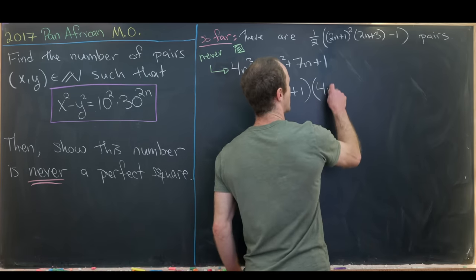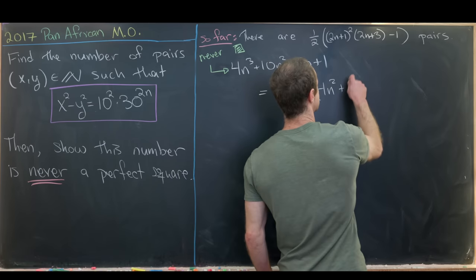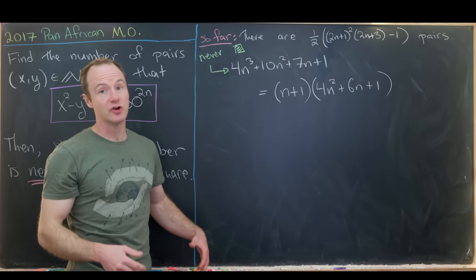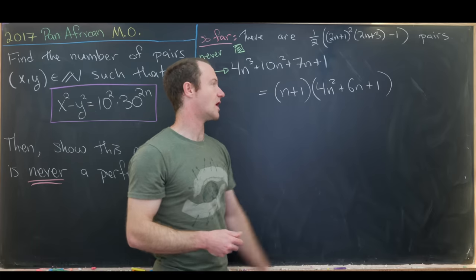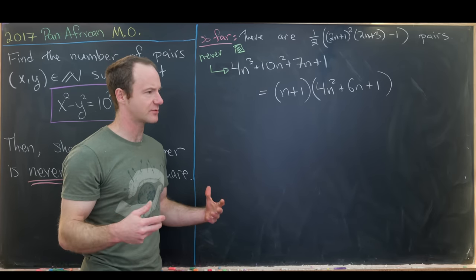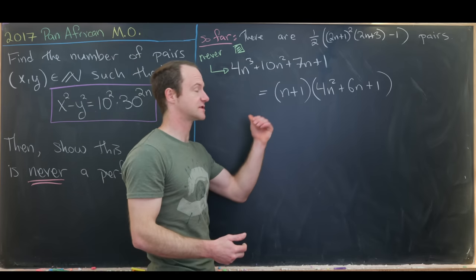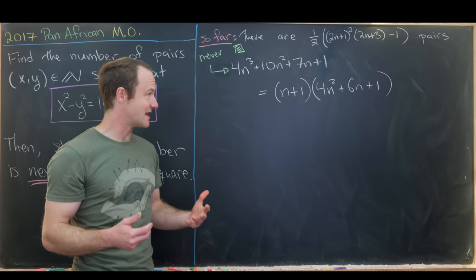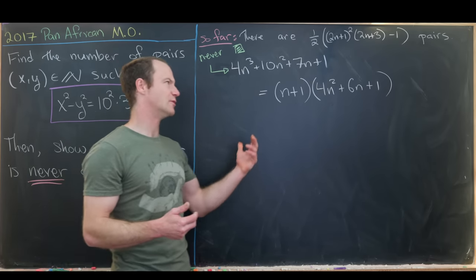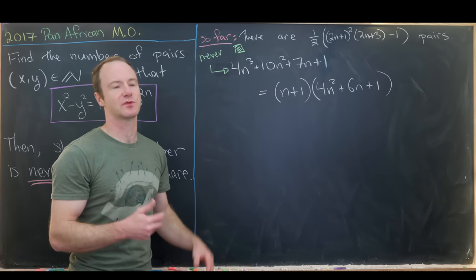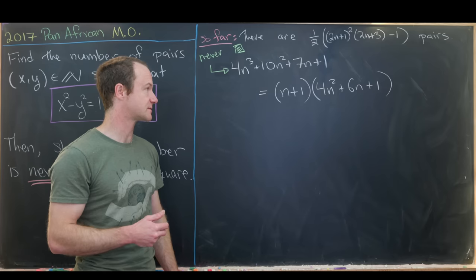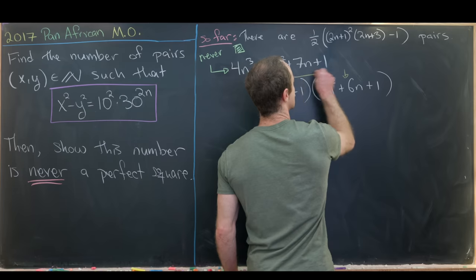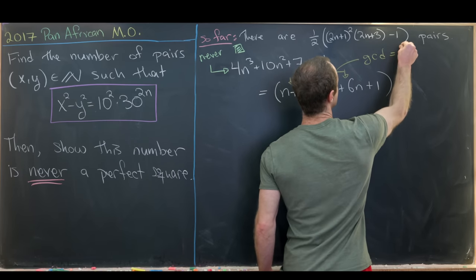Factoring out (n+1) gives (n+1)(4n² + 6n + 1). Since this is a contest problem, it's a good guess that these two factors are relatively prime — meaning their GCD equals 1 for all natural numbers n. That's our next goal to prove.